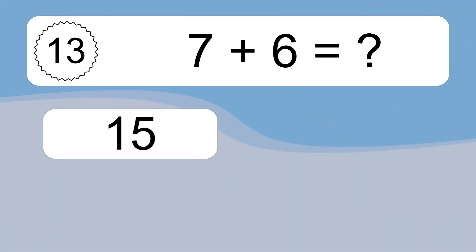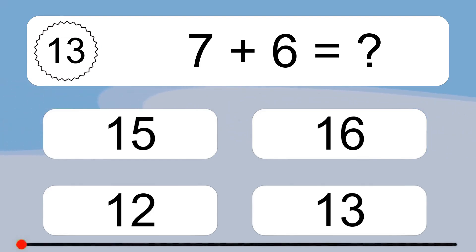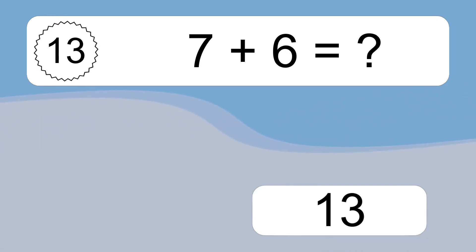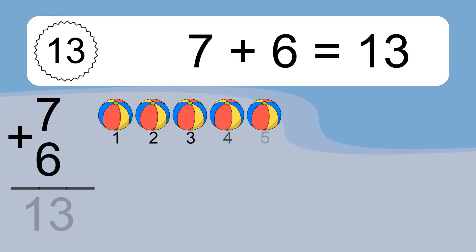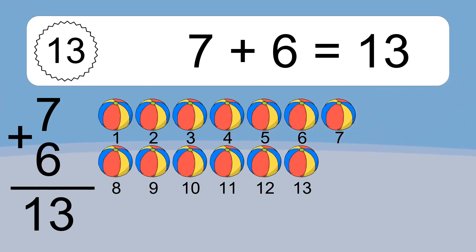7 plus 6 equals what? 7 plus 6 equals 13. Let's count it: 1, 2, 3, 4, 5, 6, 7, 8, 9, 10, 11, 12, 13.